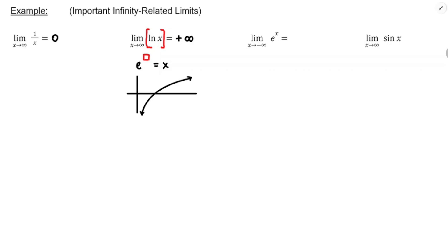As x approaches negative infinity, e to the x goes towards 0. Think about x being a large negative number like negative 100: e to the negative 100 equals 1 over e to the positive 100, which is really close to 0. So the more negative the exponent gets, the closer e to the x gets to 0. You could also look at the graph and see that as x approaches negative infinity, the graph is getting closer to the x-axis — that's why y is getting closer to 0.